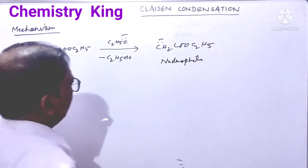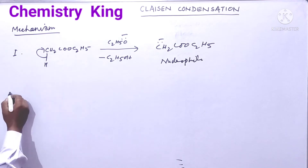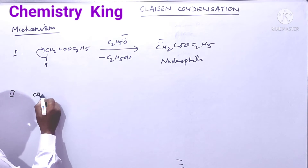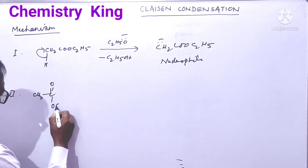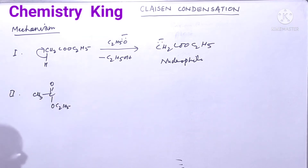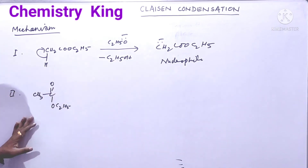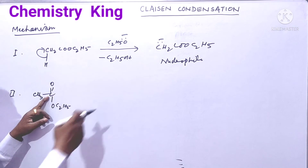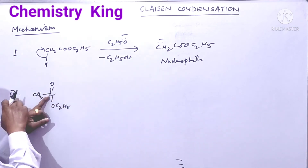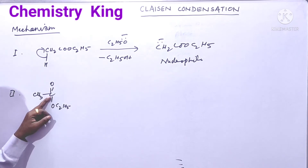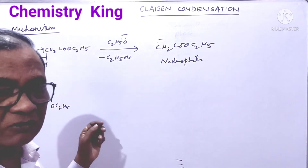Carbon ion is a nucleophile. Of course, carbanion is a nucleophile. In the second step: CH3-C double bond O-OC2H5 — it is again ethyl ester. This is the first molecule. This is the second molecule. The first molecule gets converted into a nucleophile, and this nucleophile will attack at this carbonyl carbon, because this carbonyl carbon has a delta-positive charge.